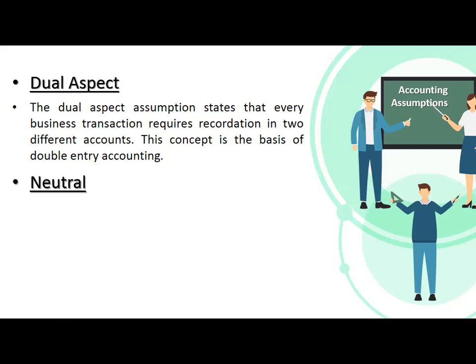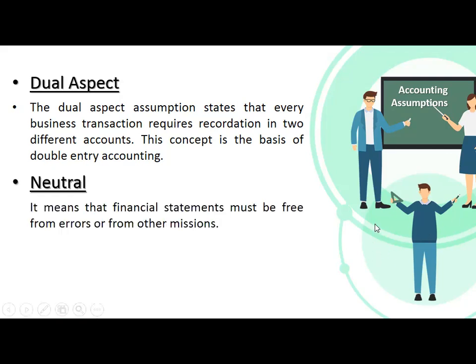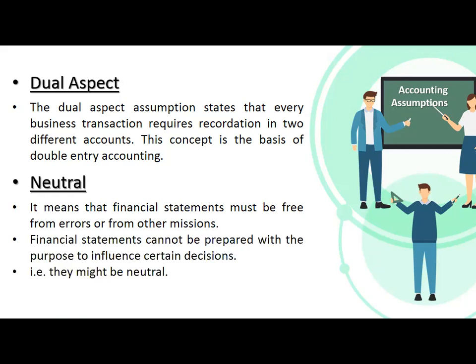Neutral. An accountant should be neutral. It means that financial statements must be free from errors or omissions. Financial statements cannot be prepared with the purpose of influencing certain decisions. They must be free from errors and free from omissions.